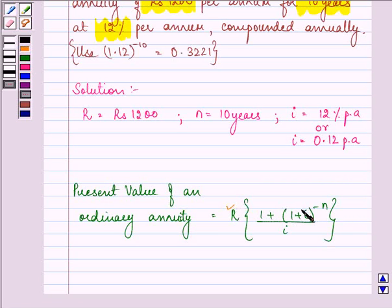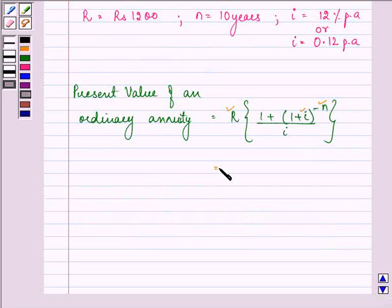We just need to substitute these three values from above that we are given in the question and we need to find out the required answer.